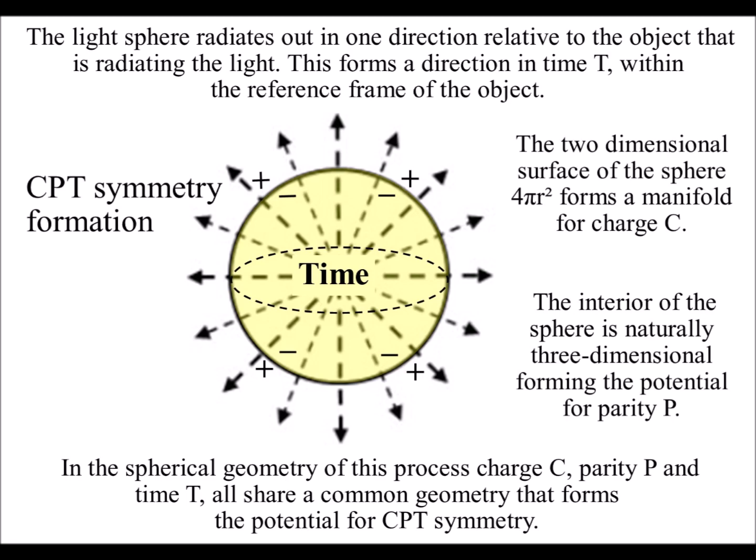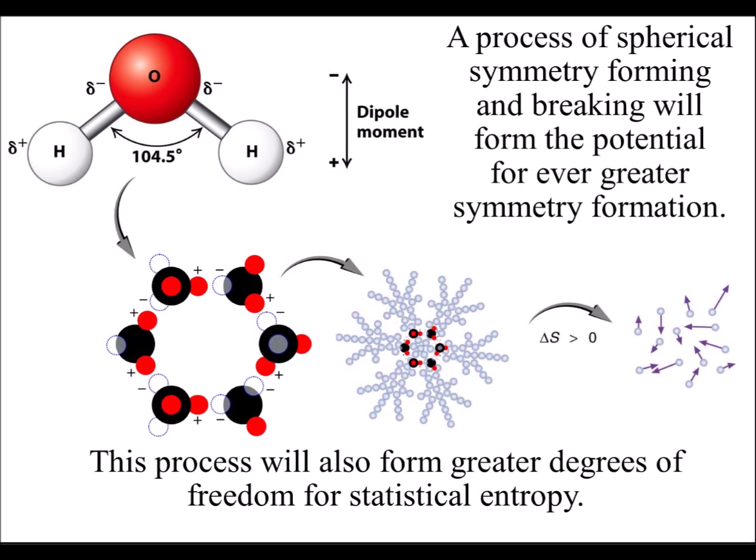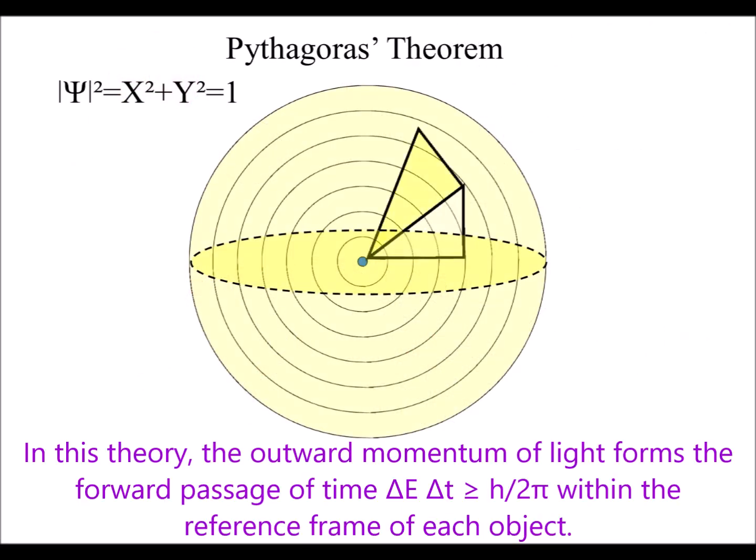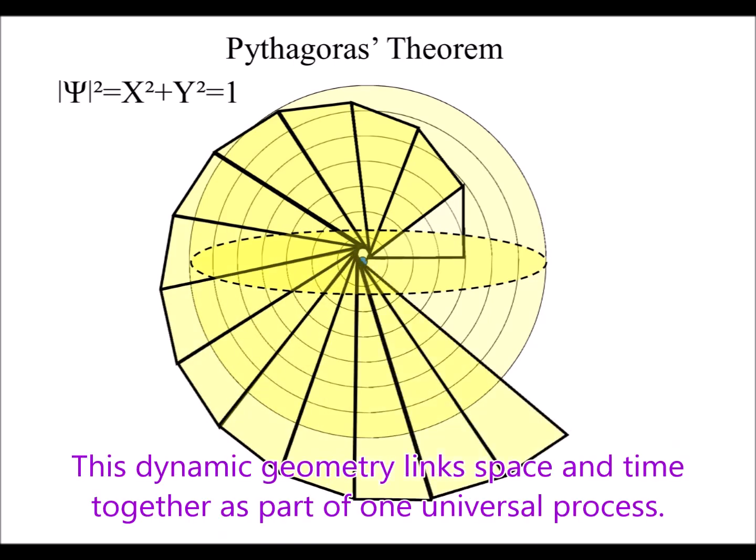The greatest probability is that this process of spherical symmetry forming and breaking will form entropy or disorganization. But because the geometry forms infinite timelines, there will always be a small chance that the symmetry will form the emergence of greater complexity.